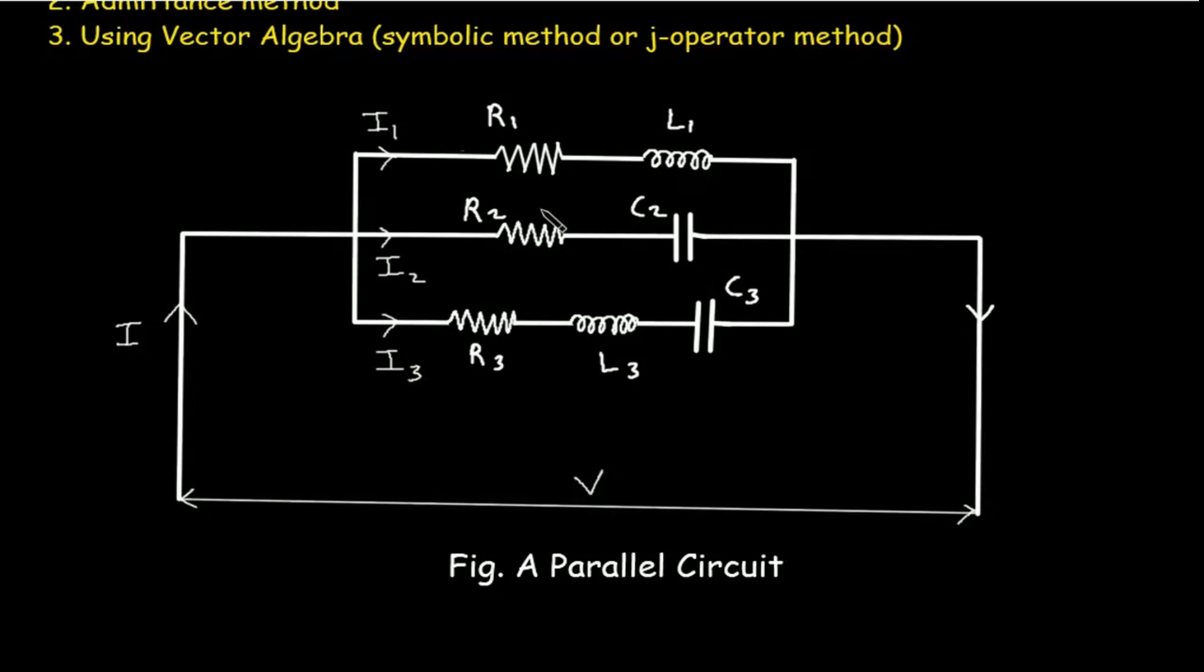This R and this C are connected in series, so this is the 2nd branch. This R, L, C form the 3rd branch. These three branches are connected in parallel. If this is an AC circuit, then AC supply is given to this circuit.